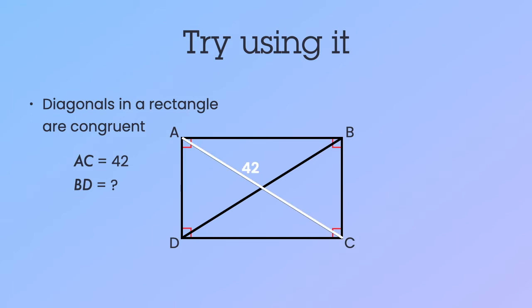Well here's AC, that's one of the diagonals. BD is what we're looking for, and that's the other diagonal. Since diagonals in a rectangle are congruent, that means that 42 is BD also.